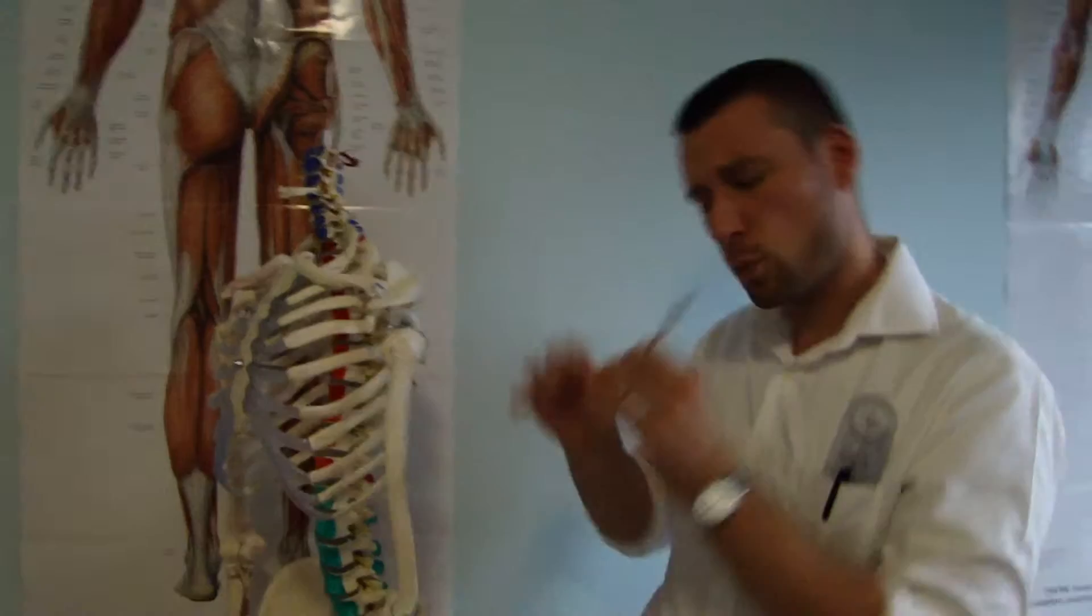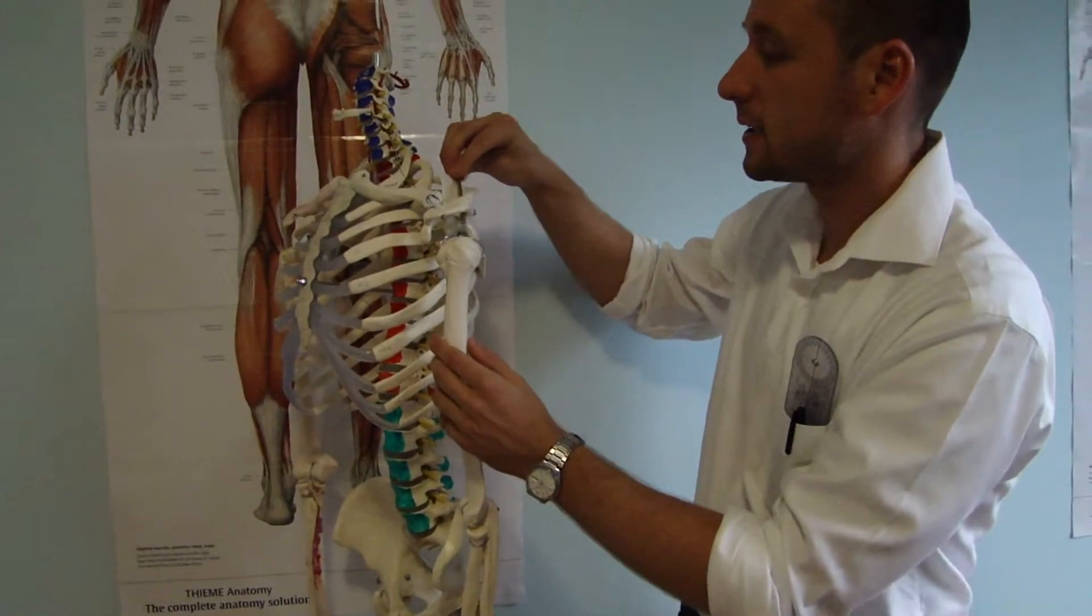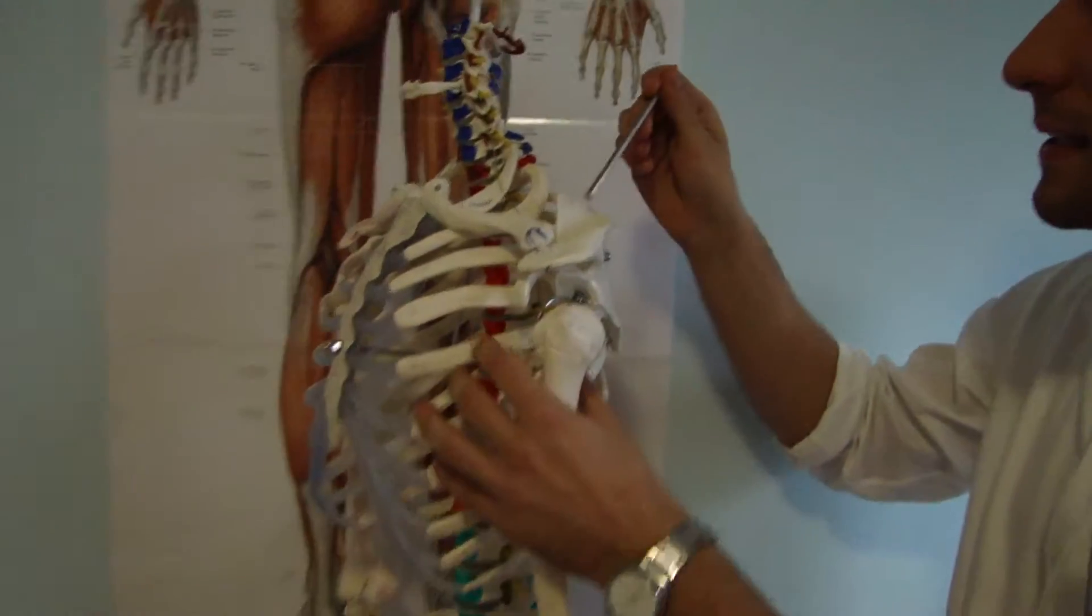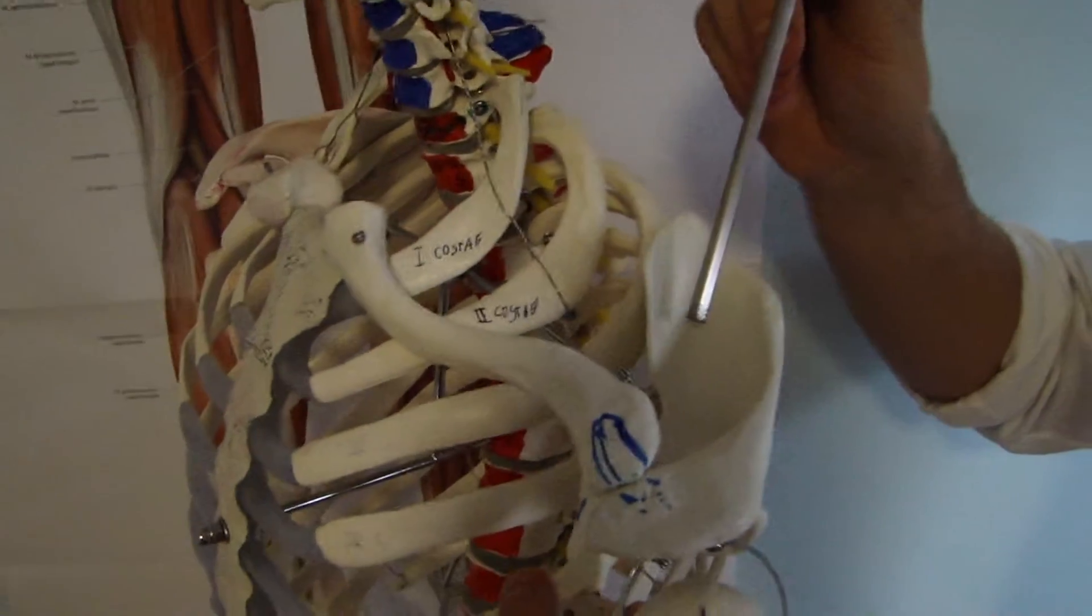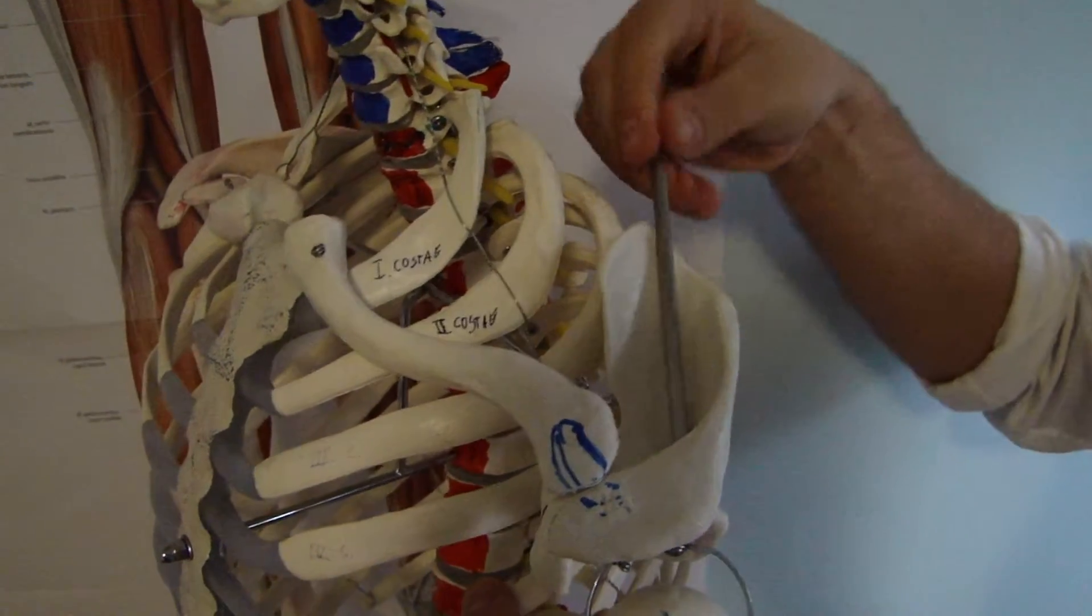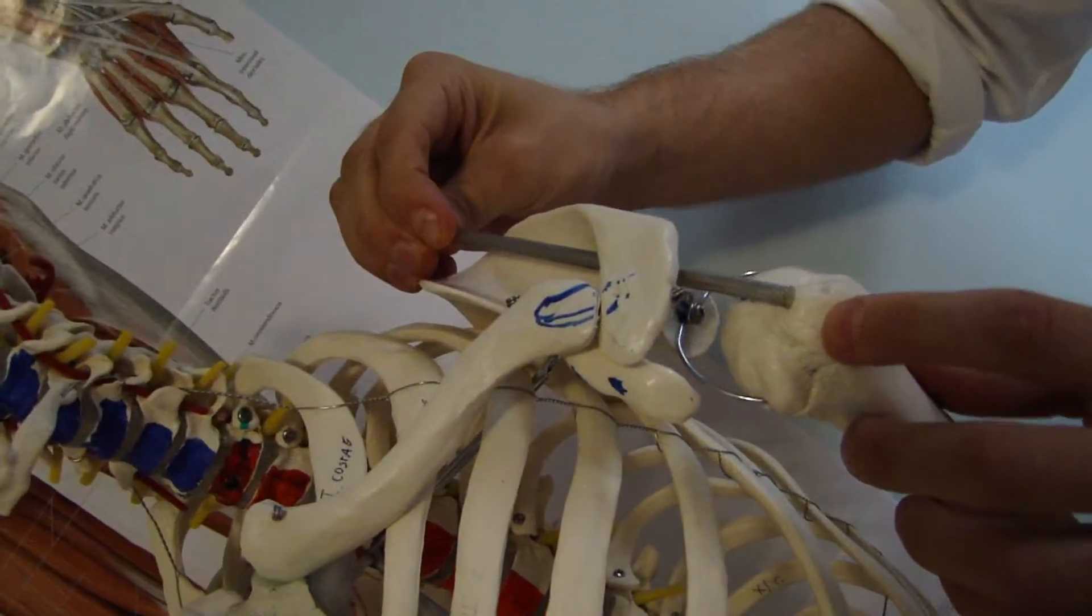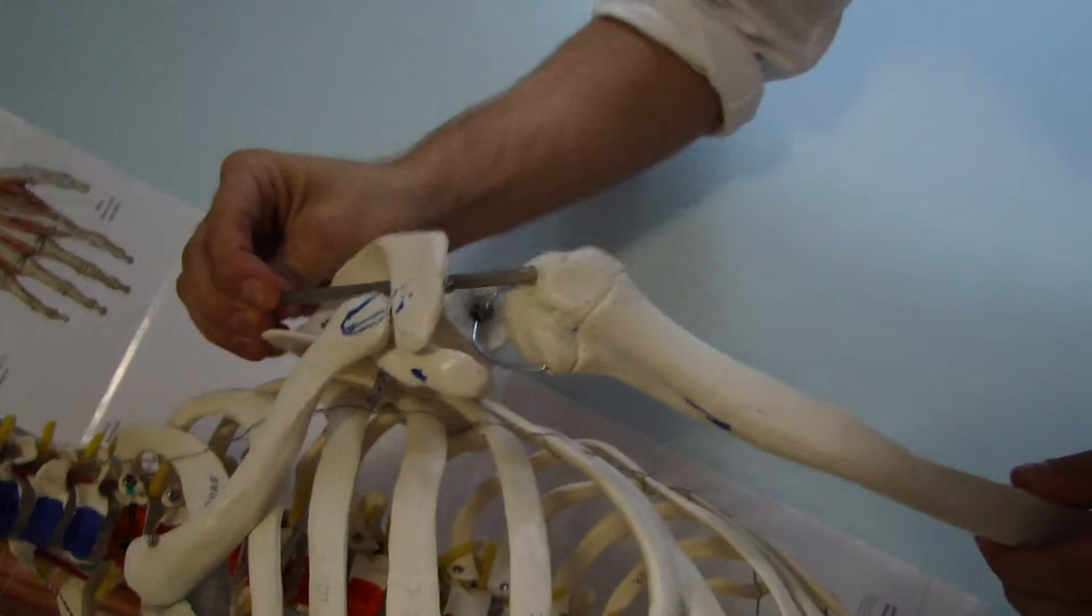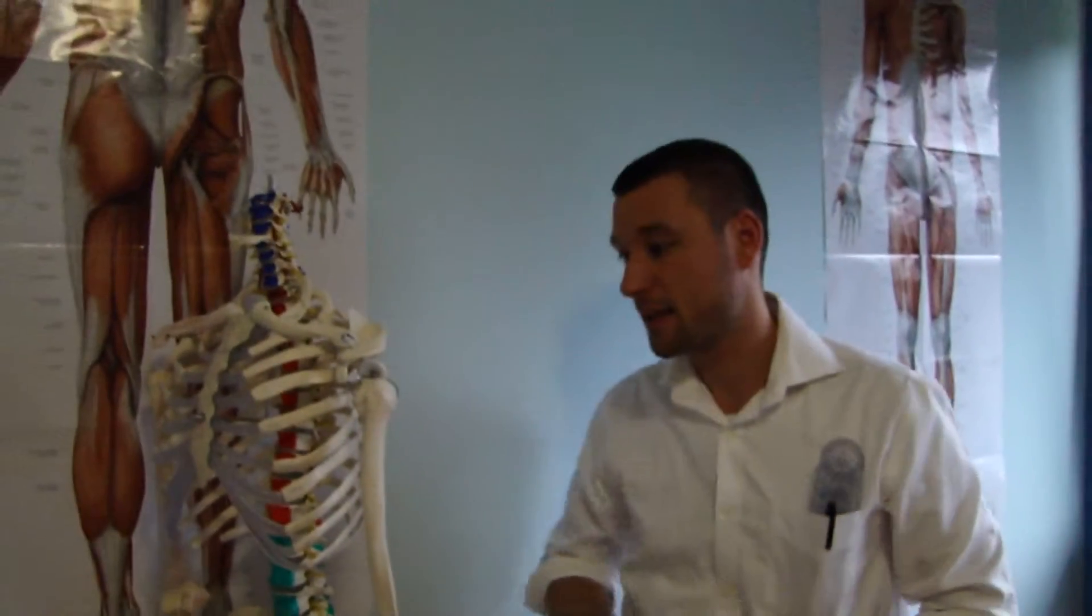And then another muscle which basically stabilizes the glenohumeral joint is supraspinatus. Muscle supraspinatus originates in two-thirds of supraspinous fossa. And then it goes and inserts here on the superior surface of greater tuberosity of humerus. And the nerve supply is suprascapular nerve.